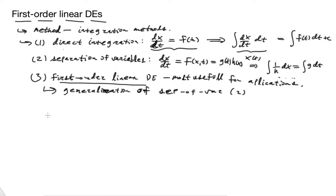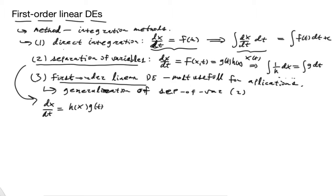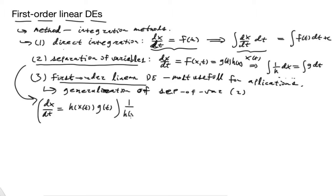Let's go back to separation of variables and get a more general perspective on it. We have dx/dt = h(x(t)) · g(t), where x(t) is the unknown function we want to find. The first thing we do is multiply the entire equation by 1/h(x(t)).